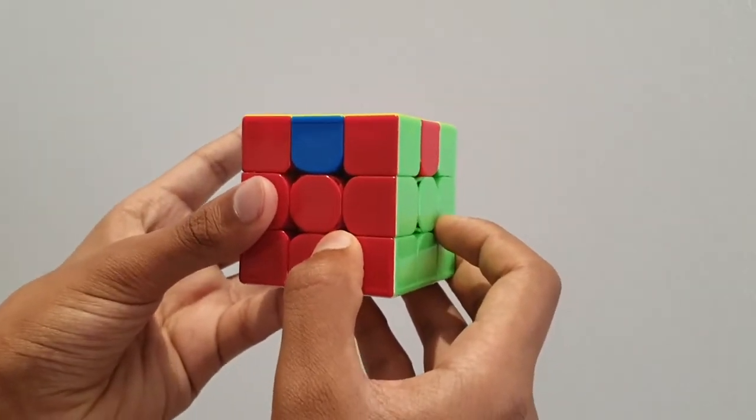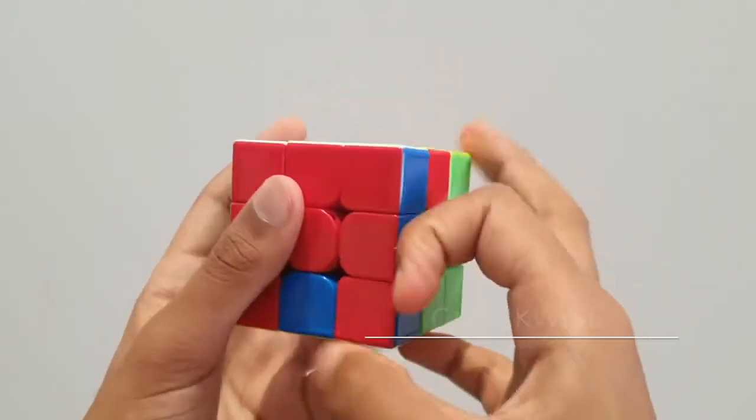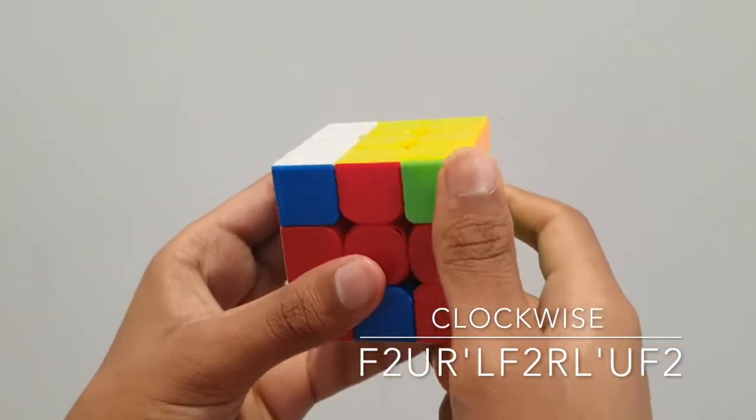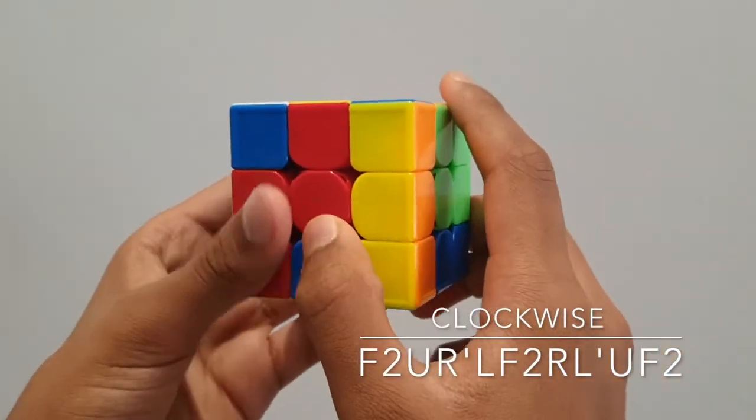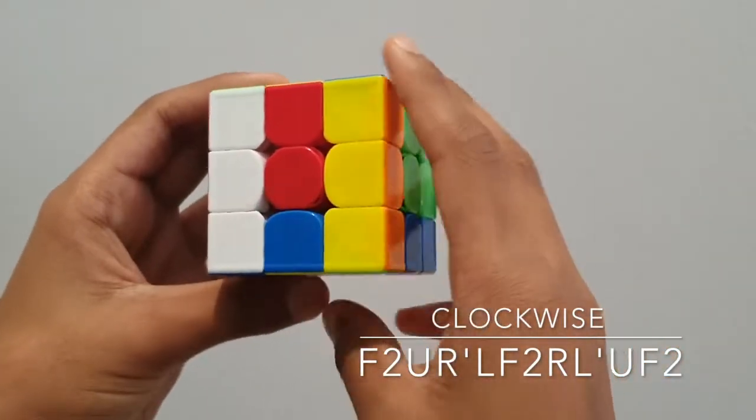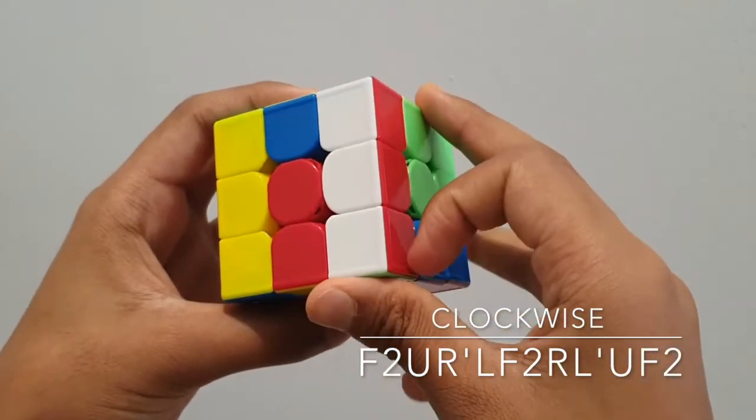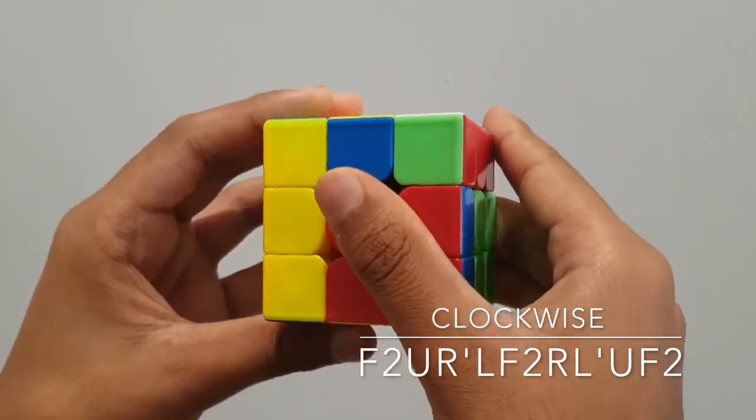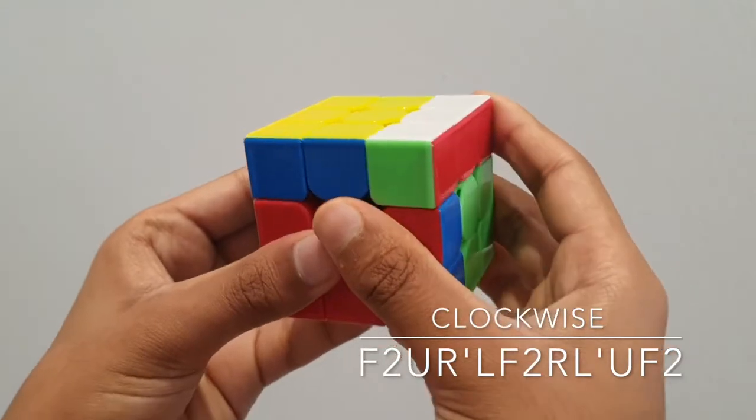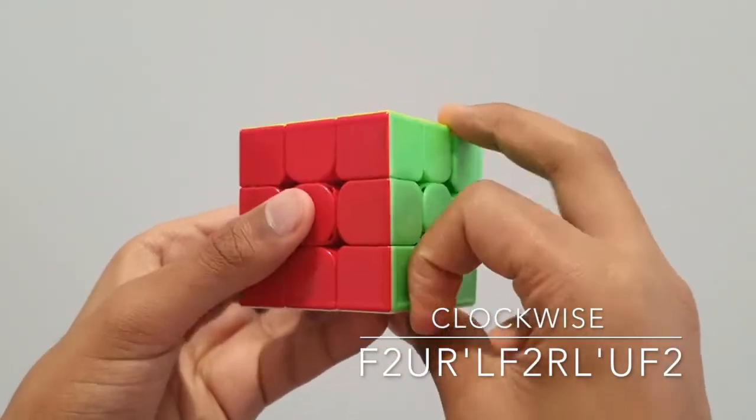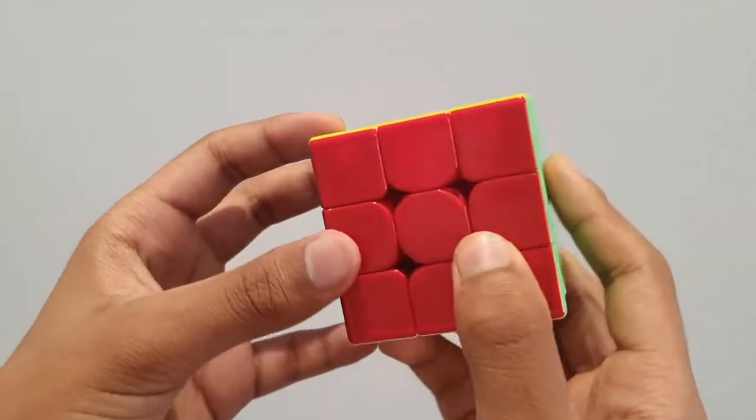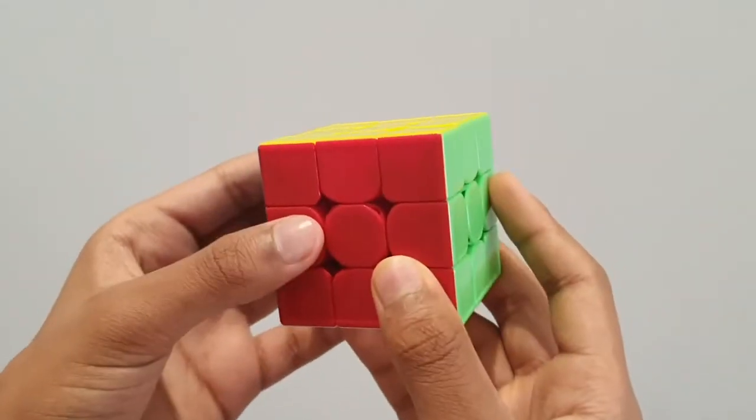Next, we can do our algorithm. It goes like this: F2, U, R prime, L, F2, R, L prime, U, F2. Now that is your fully solved cube using the clockwise algorithm.